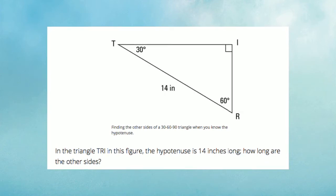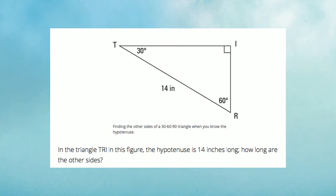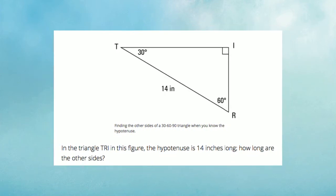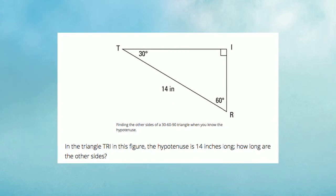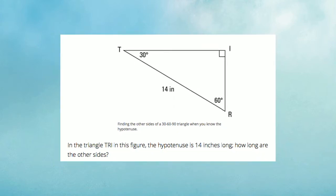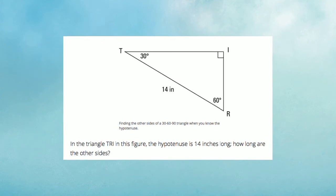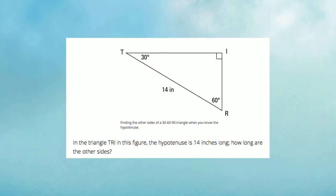Once again, you can use the special right triangle properties to solve for the unknown side lengths. In this problem, the triangle TRI in the figure has a hypotenuse of 14 inches long. Can we figure out the other sides? Of course we can. We can use the properties.